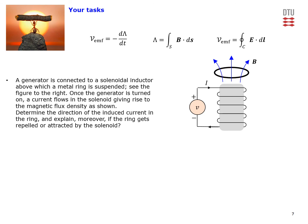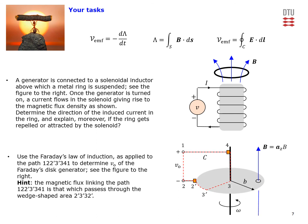Your task is to determine the direction of the induced current in the ring and to explain whether the ring will be repelled or attracted by the solenoid. The second task relates to the Faraday's disk generator. Using Faraday's law of induction applied to the particular path shown, determine the open circuit voltage V_O. As a hint, the magnetic flux linking this path passes through the wedge-shaped area shown on the figure. Thank you very much for your kind attention.